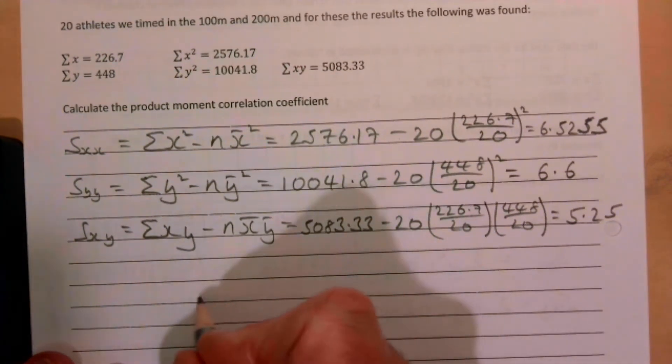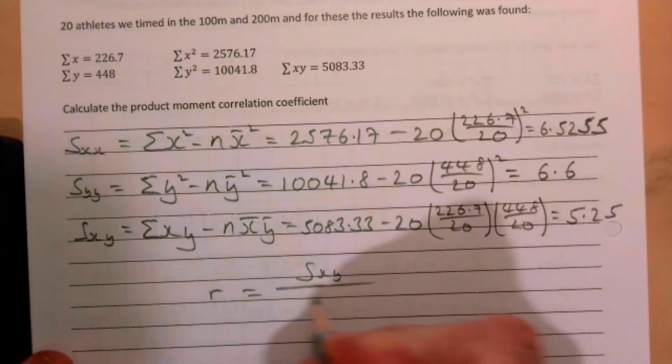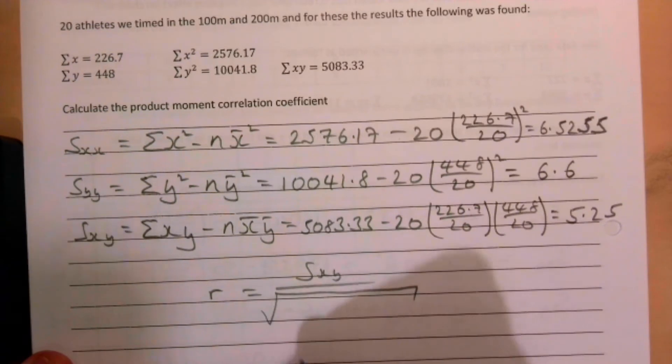And again that gives an exciting 5.25. We're ready to substitute all our values into our formula. So r is Sxy all over the square root of Sxx times Syy.